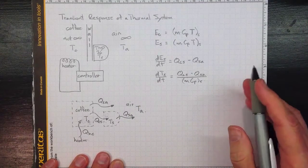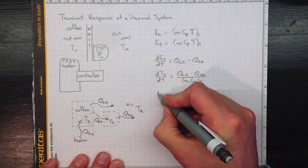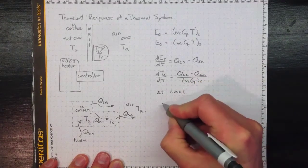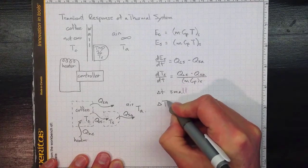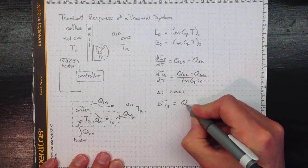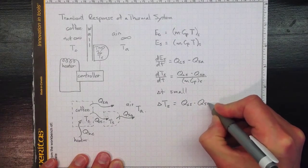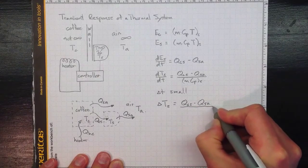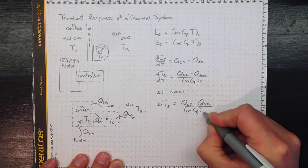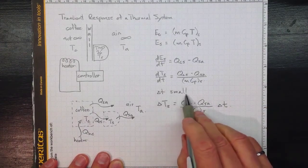Or if we take a really short time step, so delta T small, then we'll see an increase in temperature over that short time in the sensor temperature equal to Q_CS minus Q_SA over mass and specific heat of the sensor times the short time over which we're working.